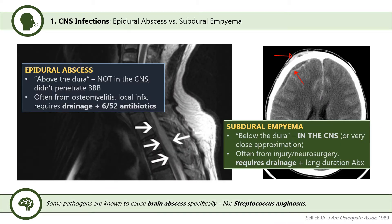Other common peri-CNS infections include the epidural abscess — a non-CNS infection outside the meninges, commonly caused by local spread from the vertebrae or hematogenous spread — and a subdural empyema, an abscess-like collection beneath the first meningeal layer due to injury or neurosurgery. Both typically require surgical drainage plus long antibiotic courses of around six weeks. For meningitis, since there is often no discrete collection, antibiotics alone are often sufficient, with treatment lasting 7 to 14 days depending on the organism. Notably, meningitis is one of the few infections where duration is guided by pathogen identity.